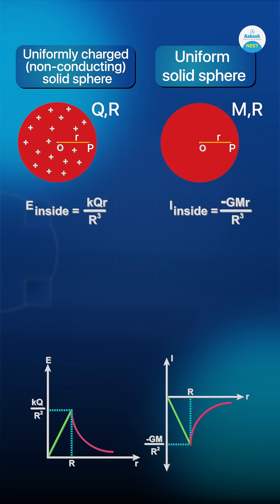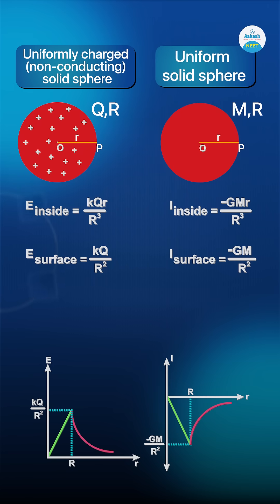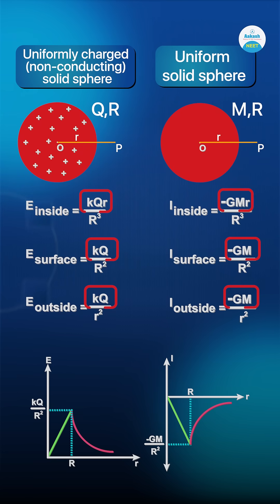On the gravitational front, we take a uniform solid sphere of mass M and radius R. And once again, the expressions for gravitational field intensity are very similar.